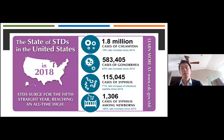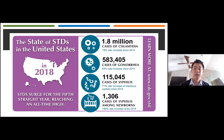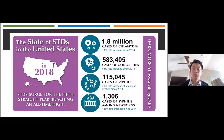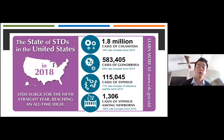Last year, the CDC announced that their 2018 surveillance data demonstrated that rates of all three reportable sexually transmitted diseases—chlamydia, gonorrhea, and syphilis—continue to rise, marking the fifth year in a row for all three diseases, and together reached an all-time high. This includes increasing rates of both syphilis and congenital syphilis, which I may refer to as CS during the presentation, and will be the focus of today's talk.